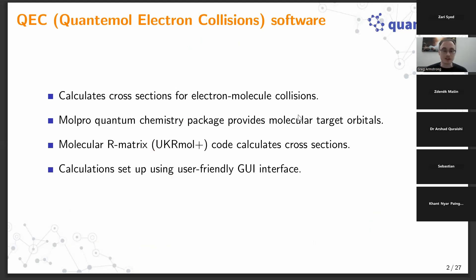What is QEC? The Quantumall Electron Collision Software Package provides cross sections for electron-molecule collisions. It interfaces with two main codes: the Molpro Quantum Chemistry Package, which provides target orbitals, and the UKArmorPlus codes which calculates cross sections. QEC itself provides a GUI interface where users input the main physical parameters for their calculation, and these are used to construct input files for Molpro and UKArmorPlus, which are then run and cross sections are output.